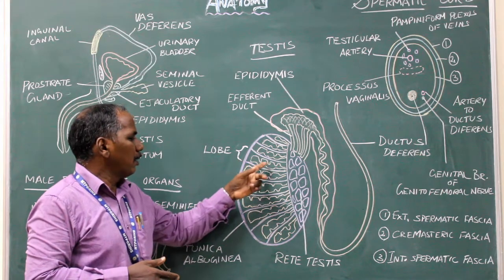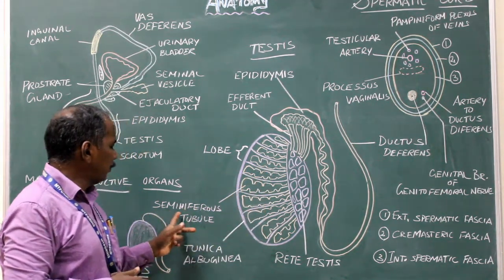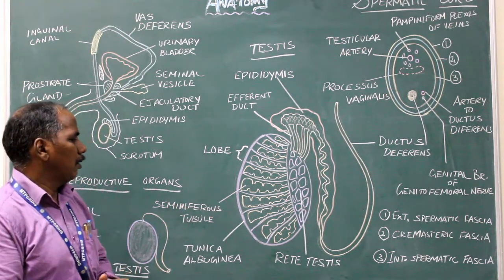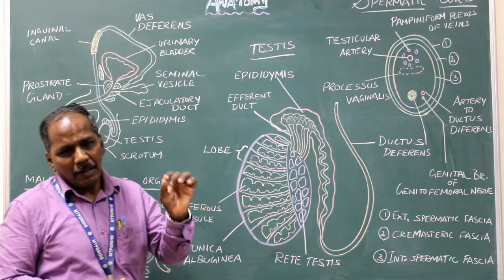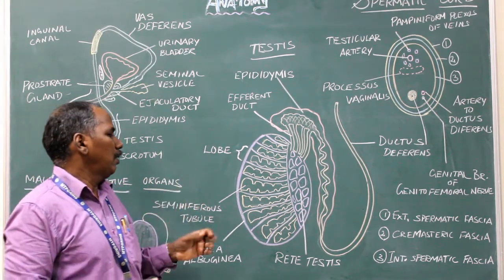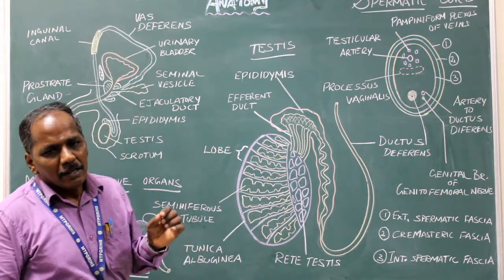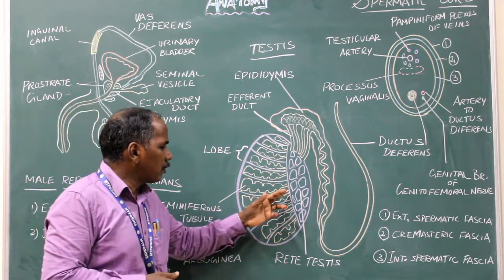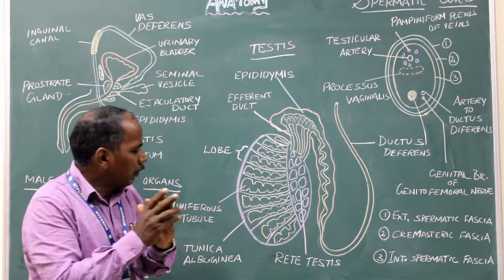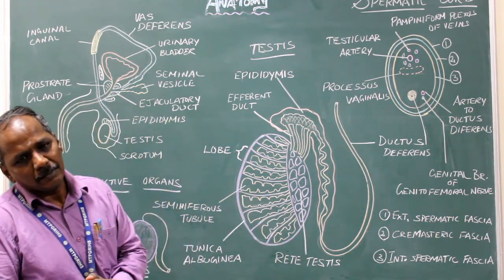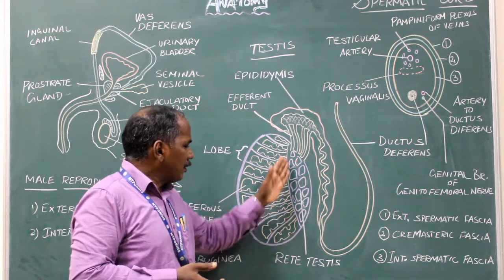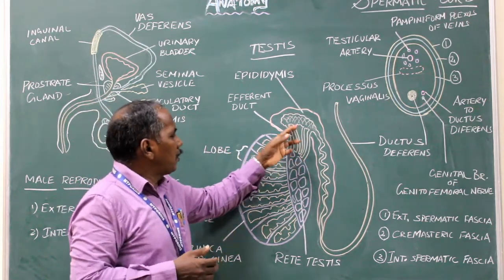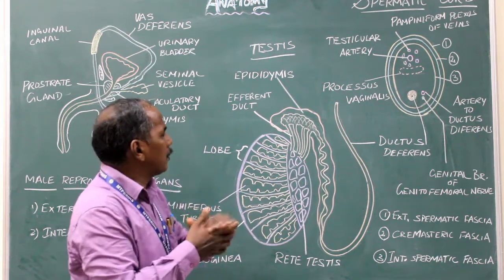Each lobule has one or two seminiferous tubules. This is the site where the sperms are produced. The posterior end of the seminiferous tubules becomes straight, forming the straight tubules. All the straight tubules unite to form a network known as rete testis. From the upper end of the rete testis, 18 to 20 efferent ducts arise. They join to form a coiling structure known as epididymis.